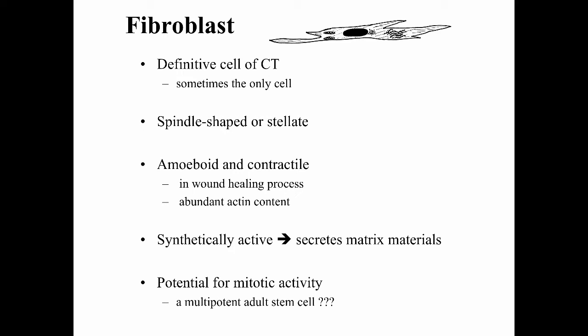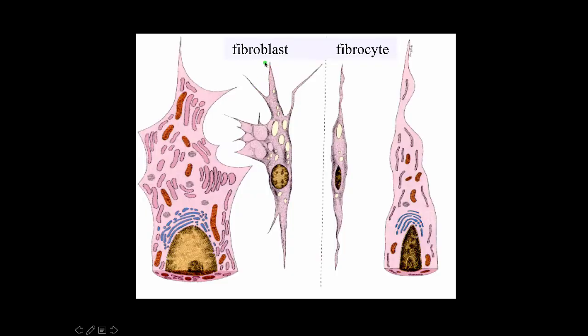Fibroblasts also have the potential for mitotic activity, and some authors suggest fibroblasts might be a multipotent stem cell. We often confuse fibroblasts and fibrocytes and use the terms interchangeably. The fibroblast is actually the immature, synthetically active cell in connective tissue, while the fibrocyte is the mature, synthetically less active cell.